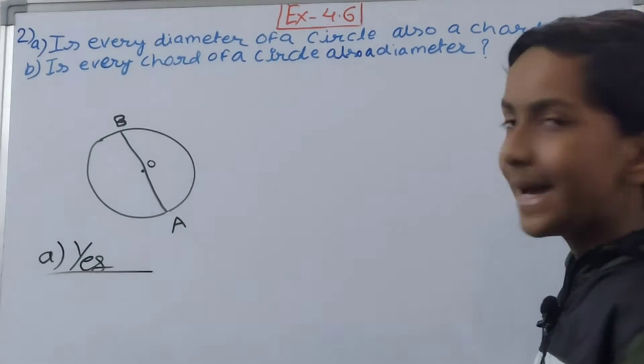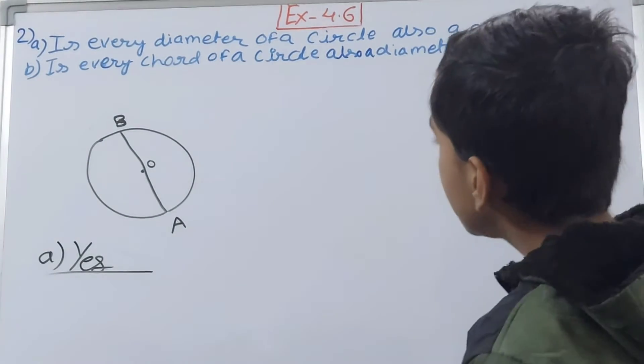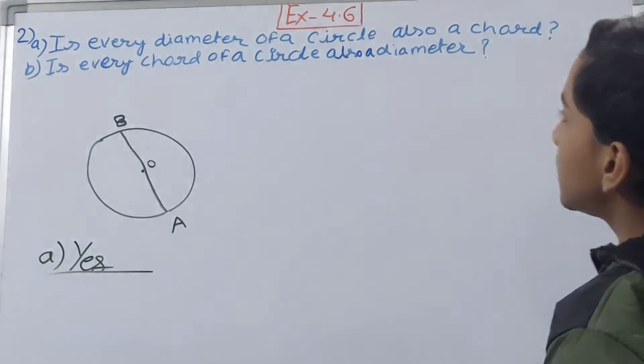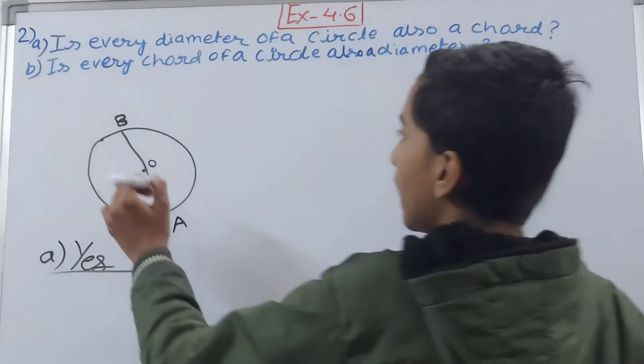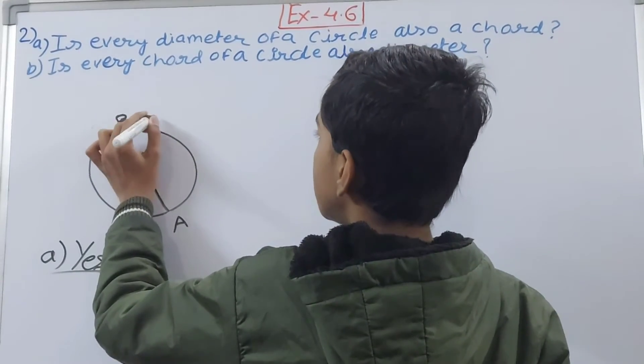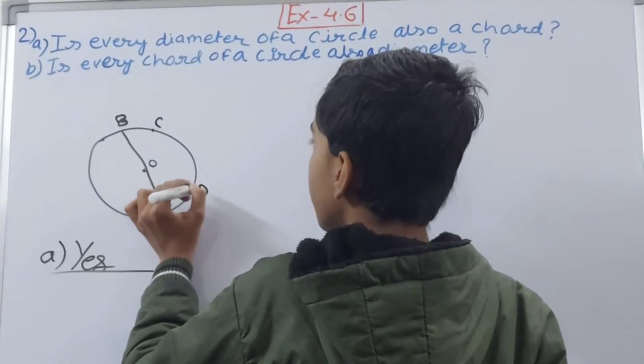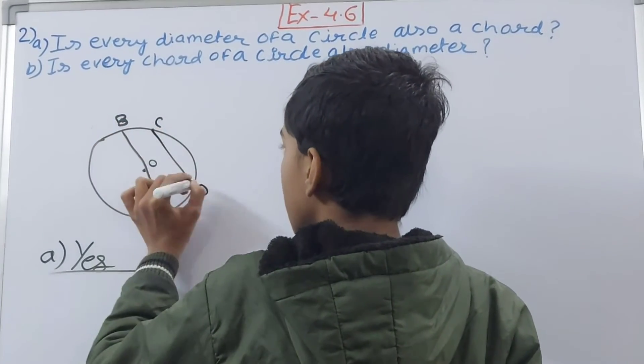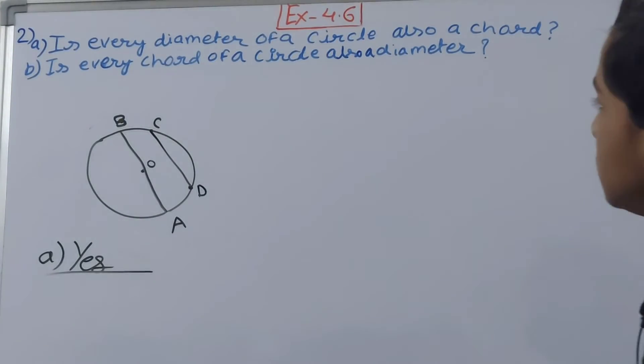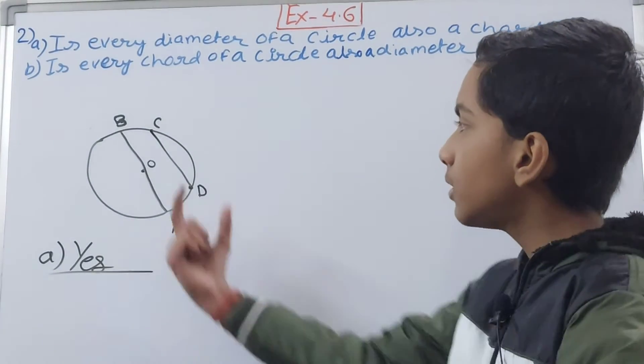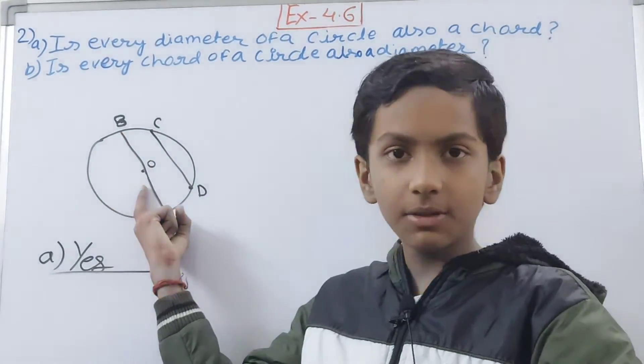Next is, is every chord of a circle a diameter? Let us see. I take here this point C and I take here this point D and I connect it. So you can see, it is asking is every chord?